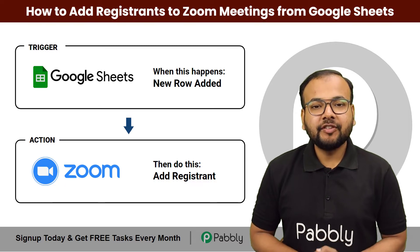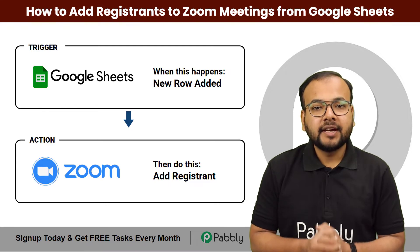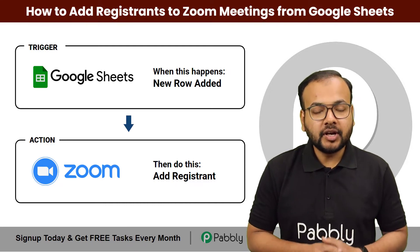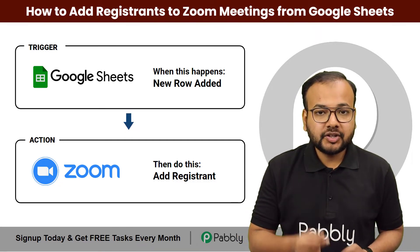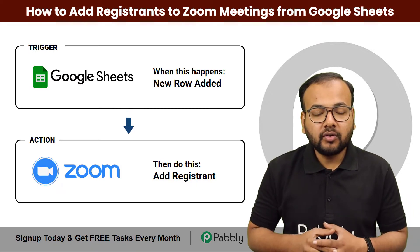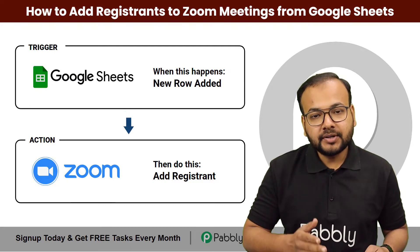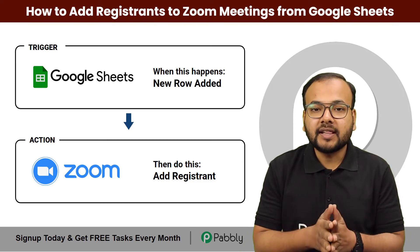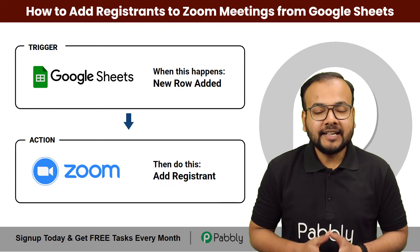In this video, you will learn how you can add registrants into your Zoom meetings directly and automatically from the Google Sheets application. You have to connect Google Sheets as the trigger application and Zoom as the action application in the automation workflow. Whenever you add any person in Google Sheets, the same person will be automatically added as the registrant in Zoom as well. We are going to set up this automation without any coding, very easily. So let's begin.